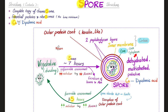Look at this lovely cycle. When the circumstances are favorable, the bacteria is dividing like crazy. But under unfavorable conditions, the bacteria will make a spore. When the conditions go back to being favorable, the bacteria will go back to being in the vegetative state. Let's make a spore — how long does that take? About seven hours.